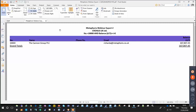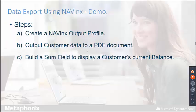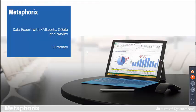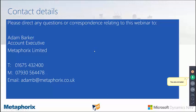That's a brief overview of outputting data from NAV using NavLink, the third-party solution we offer. In summary, today I've given a brief introduction to three main methods for outputting data in NAV: two standard NAV methods — XML ports and OData — and NavLink, which is a third-party solution. I'll hand back to Adam now.